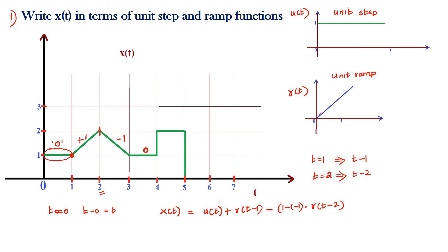The slope goes from minus one back to zero. For the slope to become zero we must add another positive one slope term. So we add plus r(t − 3), since the starting point is t = 3. At t = 3, t minus three equals zero. After this point the slope is zero — a flat region.